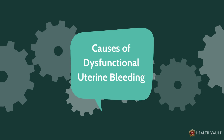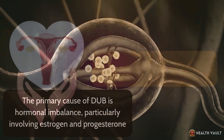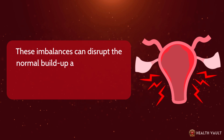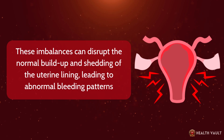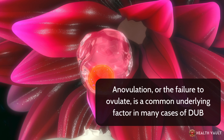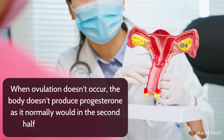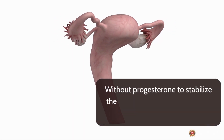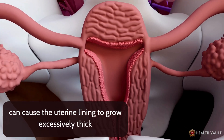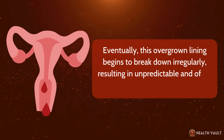The primary cause of DUB is hormonal imbalance, particularly involving estrogen and progesterone, which are the key hormones that regulate the menstrual cycle. These imbalances can disrupt the normal buildup and shedding of the uterine lining, leading to abnormal bleeding patterns. Anovulation, or the failure to ovulate, is a common underlying factor. When ovulation doesn't occur, the body doesn't produce progesterone, and without it to stabilize the endometrium, the continued influence of estrogen can cause the uterine lining to grow excessively thick, eventually breaking down irregularly and causing unpredictable, often heavy bleeding.